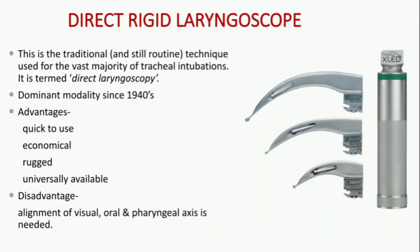Direct rigid laryngoscopes are the traditional and still routinely used technique for the vast majority of tracheal intubations. The use of a direct laryngoscope is termed direct laryngoscopy, and it has been the dominant modality since the 1940s. The advantages include being quick to use, economical, rugged, and universally available. The disadvantage is that alignment of the visual, oral, and pharyngeal axes is needed.